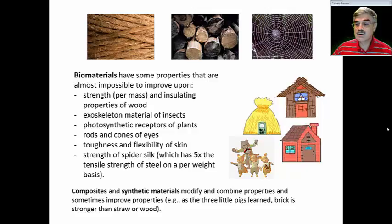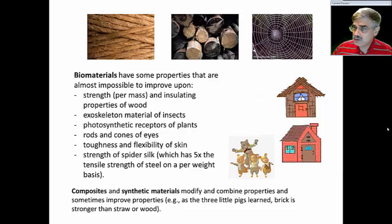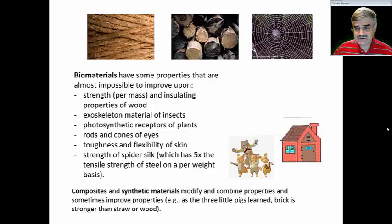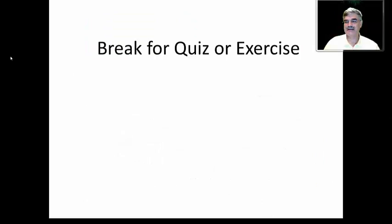And, of course, you remember what happened. The first home blew away when the big bad wolf came and blew at the door. The second wooden home survived a little longer. But the home made out of the composite material could withstand the huffing and puffing of the big bad wolf. So we will talk about, in the next few slides, various composite and synthetic materials and their properties. Now we'll take another break and have a little quiz or exercise and come back later.